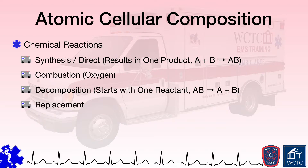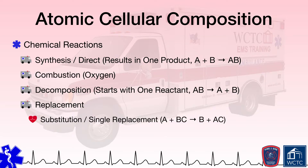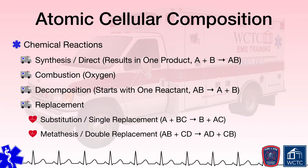The last type of common chemical reaction we need to cover is known as a replacement reaction. In such a reaction, two substances are decomposed and synthesized to produce different substances. There are actually two kinds of replacement reactions. A substitution, or single replacement reaction, is one in which a single free element replaces one of the elements in a compound — for example, combining sodium with water yields sodium hydroxide and hydrogen. A metathesis, or double replacement reaction, is often thought of as a swapping of pairs or partners: combining AB with CD yields AD and CB. An example would be calcium carbonate and hydrochloric acid yielding calcium chloride and carbonic acid.